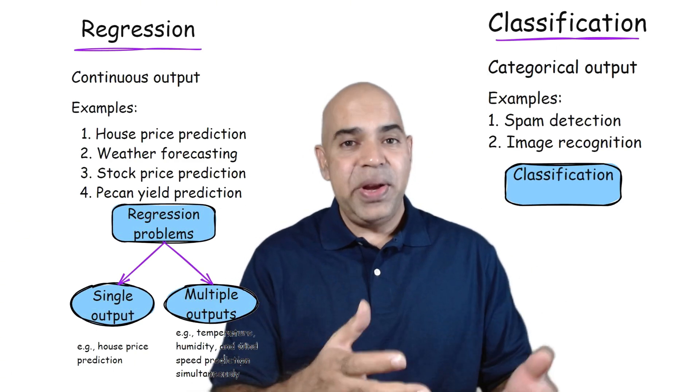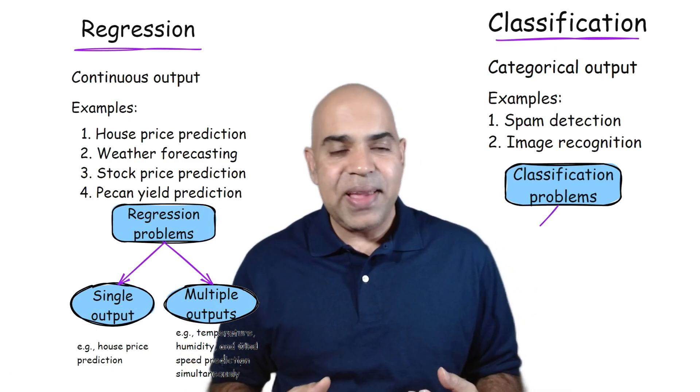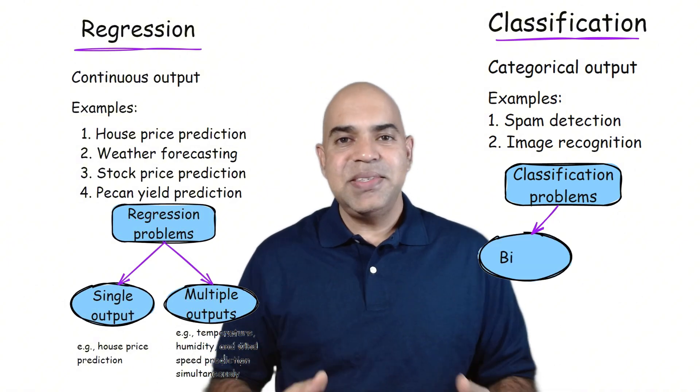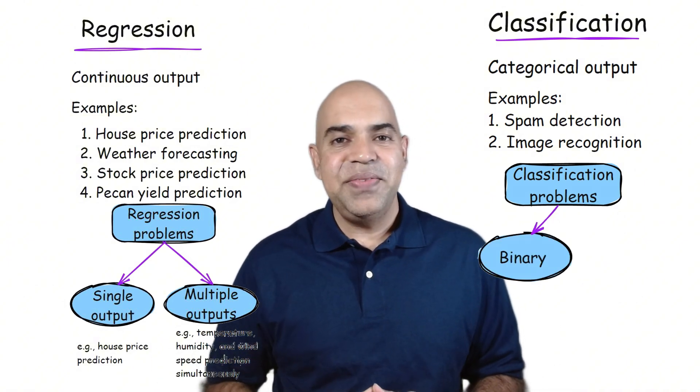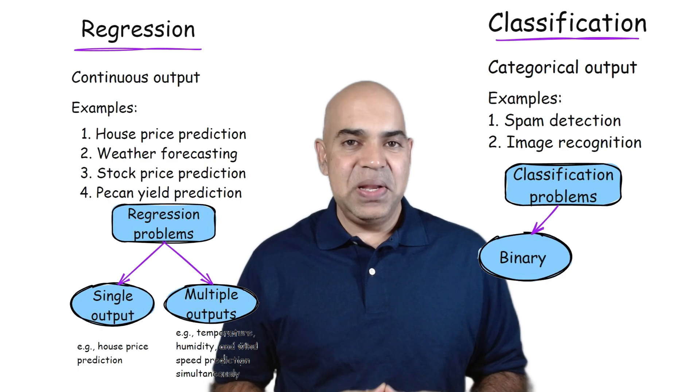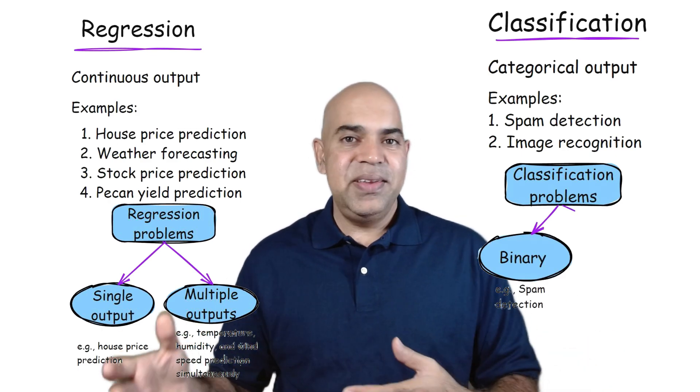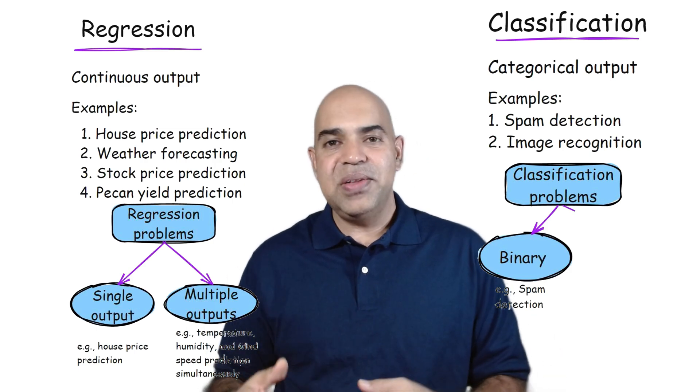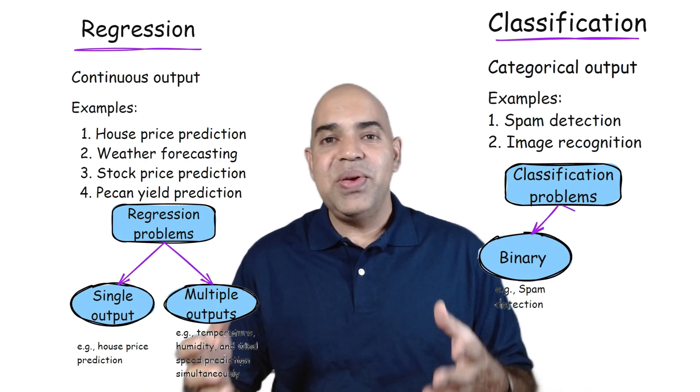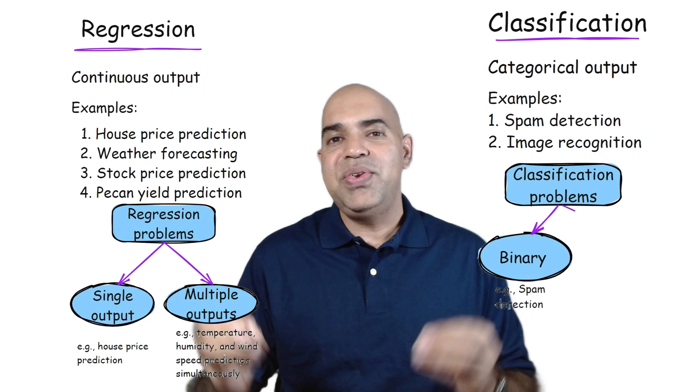What does the output or the prediction in classification look like? Well, as we just discussed in binary classification, there are two possible outcomes, such as yes or no, or in another dataset it can be true or false. That is, the prediction always results in one of two class levels.